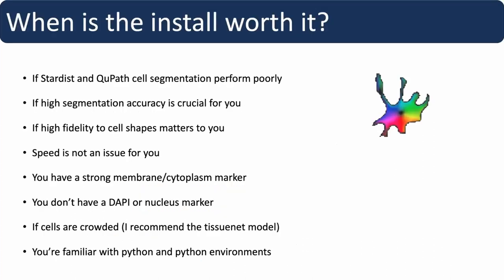So when is the install actually worth it? If you've tried QPath's built-in cell segmentation and cell expansion and you're not convinced, or Stardust is failing, then I recommend you try CellPose. Also, if high segmentation accuracy is crucial — a lot of people report CellPose as slightly more accurate than Stardust, though we found them on par when retrained with the same datasets. It also has the advantage of high fidelity to cell shapes — Stardust approximates cells as circles or ellipses, but CellPose doesn't make that assumption.